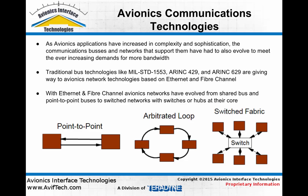With ethernet and fiber channel types of networks used in avionics applications, these systems have evolved from shared buses and serial links — common with 1553 and ARINC 429 — to switch networks where switches or hubs are at the core of the network, serving as the mass interconnect connecting all of the end nodes of the system.